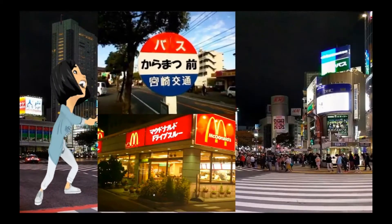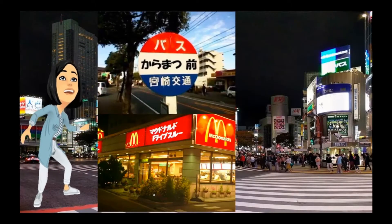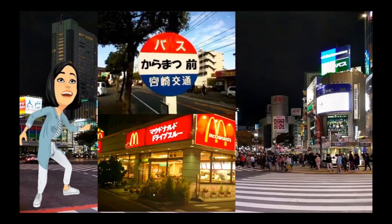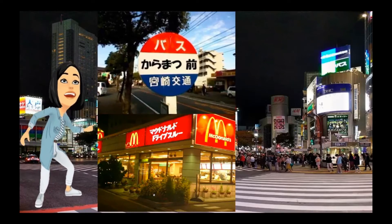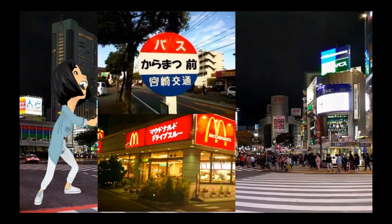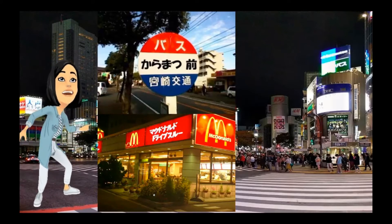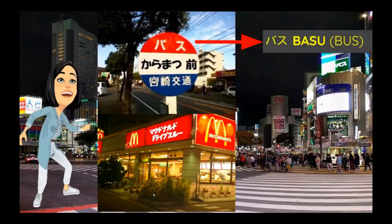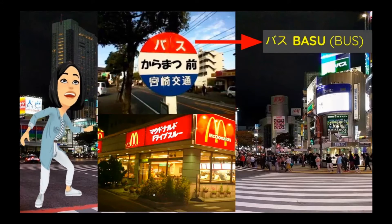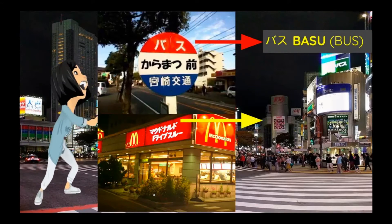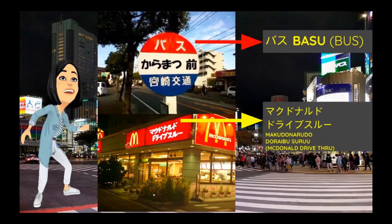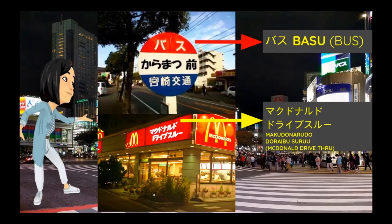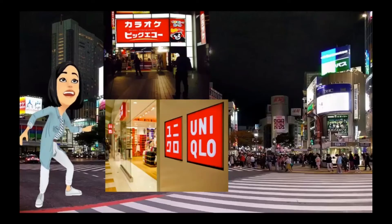Imagine yourself walking in a Japanese street and you are looking for a bus stop. Bus in Japanese is 'basu' — ba-su. If you have the background in how to read katakana, then you will know how to read 'basu' as it is written on the signage. McDonald's is also available in Japan — Japanese read it as 'makudonarudo': ma-ku-do-na-ru-do.